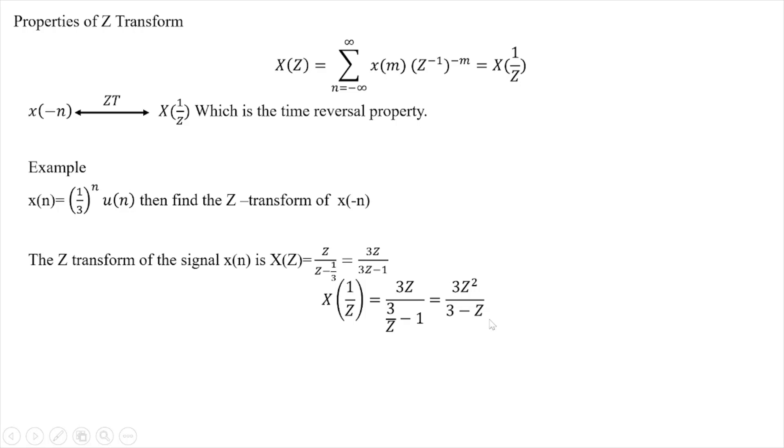Now using time reversal property, the z-transform of x(-n) equals X(1/z) equals 3z^2/(3-z).